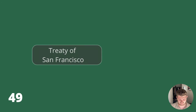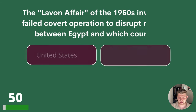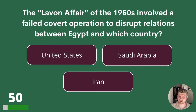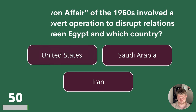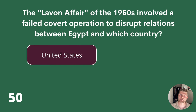Question 50. The Lavon Affair of the 1950s involved a failed covert operation to disrupt relations between Egypt and which country? United States, Saudi Arabia or Iran? The answer is the United States.